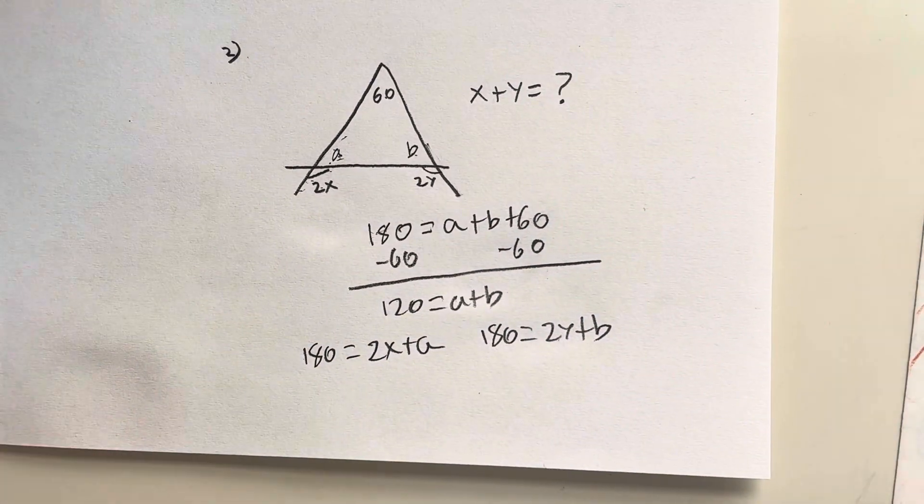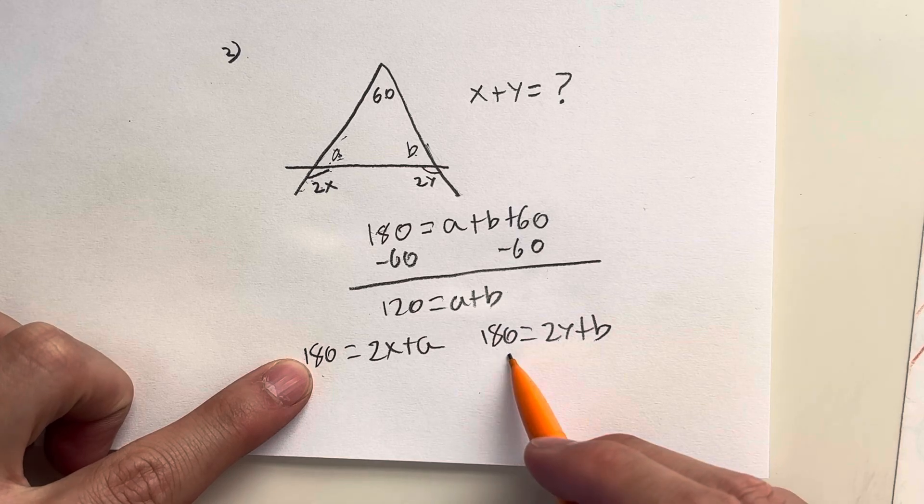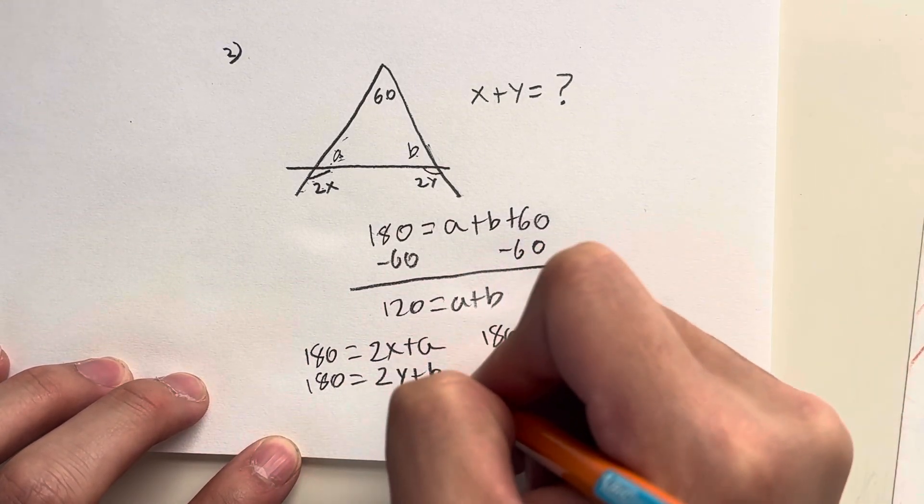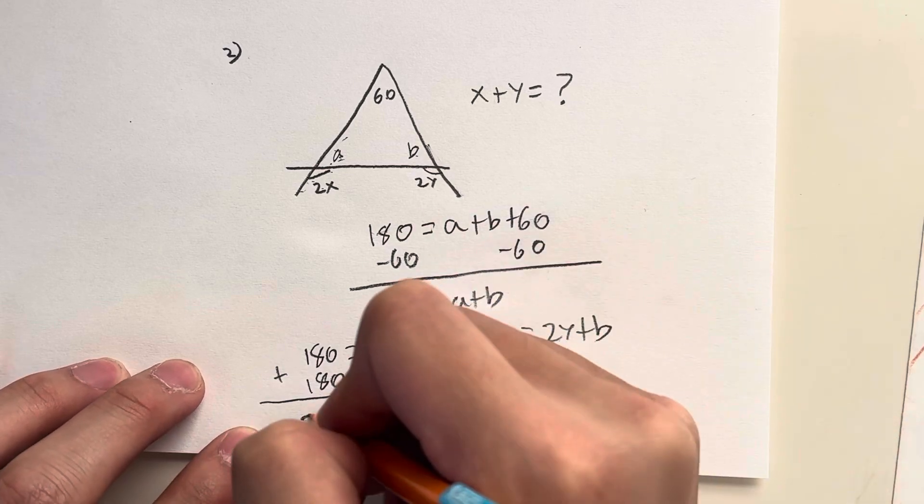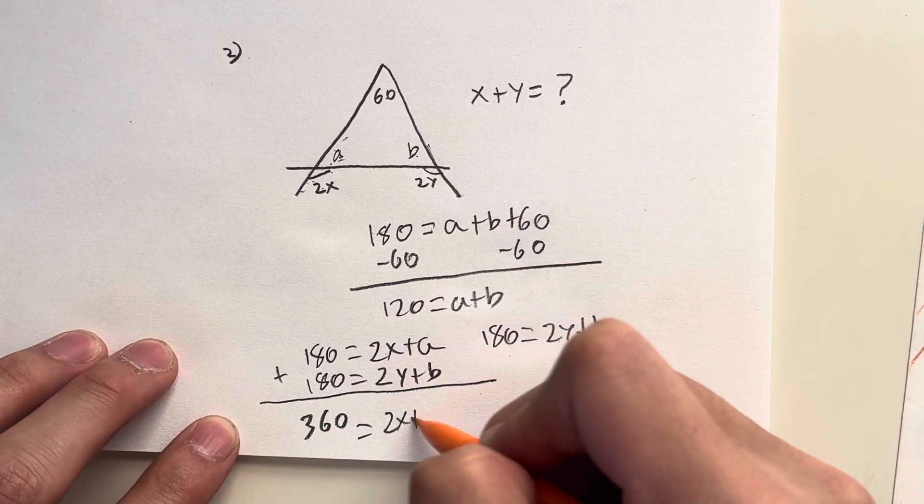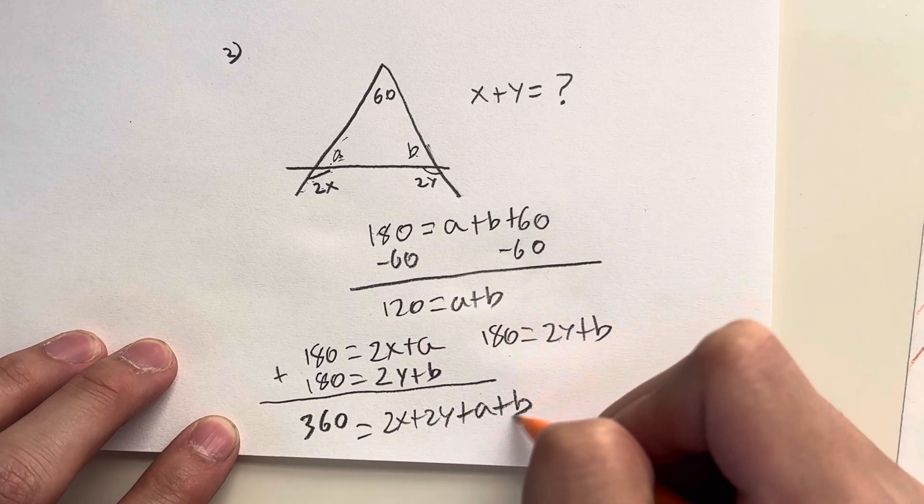Now what I'm going to do from here is I'm going to combine both equations. So if I add these two equations up, 180 is equal to 2y plus B, I add these two equations, I'm going to end up with 360, 180 plus 180. So you get 2x plus 2y plus A plus B.